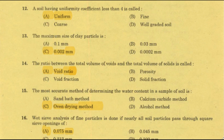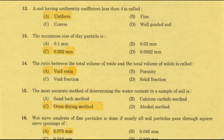Question: Soil having uniformity coefficient less than 4 is called — the right answer is option A, uniform. The uniformity coefficient Cu is equal to D60 divided by D10. D60 is the particle size at which 60% of particles are finer; D10 is the effective size where 10% of particles are finer. The uniformity coefficient is a measure of particle size range and its value is always greater than or equal to 1.